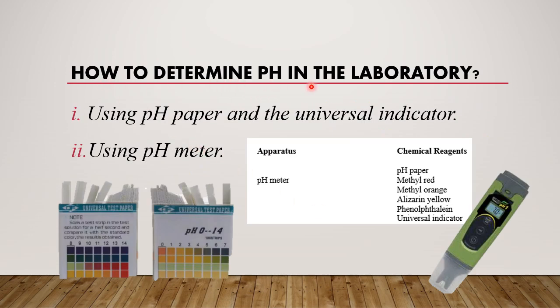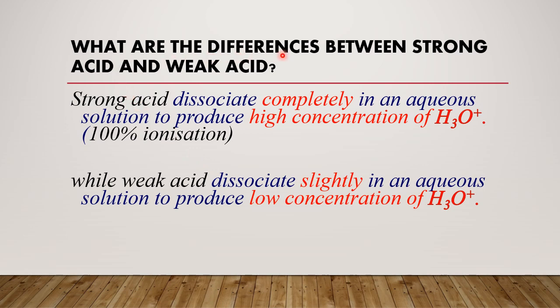Next, how to determine pH in the laboratory? If you refer to, let me know, this is the apparatus or chemical reagents that can determine the pH. So in general we can use pH paper and the universal indicator, or using pH meter. Then what are the differences between strong acid and weak base?